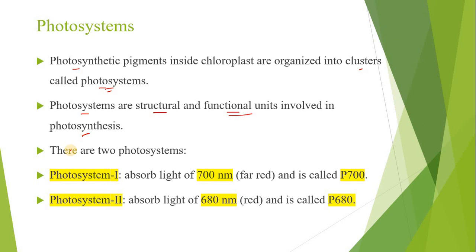So we can say that photosystems are actually structural and functional units involved in photosynthesis. In eukaryotic plants or eukaryotic photosynthetic organisms there are two photosystems: Photosystem 1 and photosystem 2.